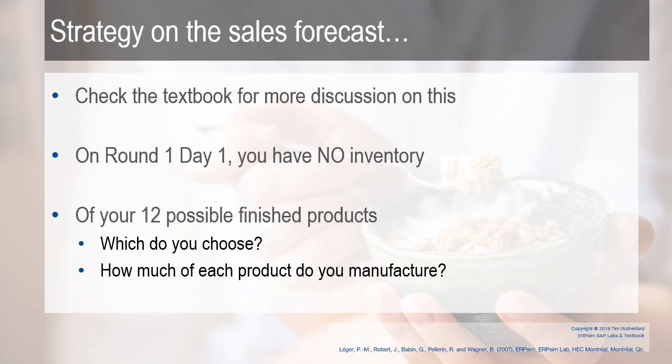Just realize that on round one, day one, you have no inventory. You have 12 possible finished products — six products, two different sizes. Which of those 12 do you choose? How much of each product do you manufacture? This is strategic in nature. With no inventory and no historical sales data, which do you choose and how much?